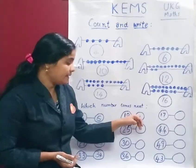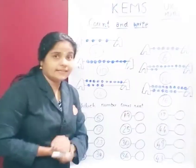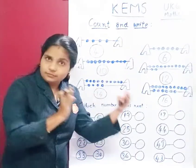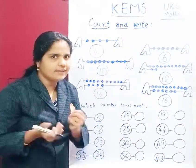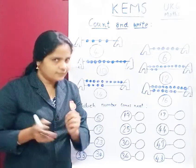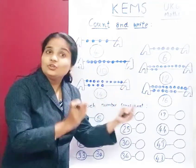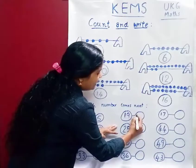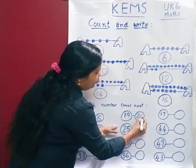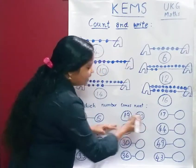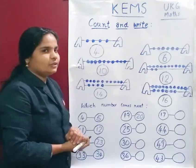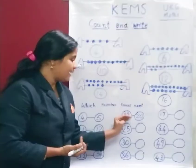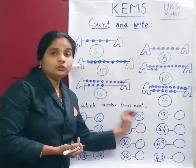Next, listen here: 19. Then next number after 19. Say that number. 19, 20. Yes, very good. 19, 20. Write 2, 0 — 20.